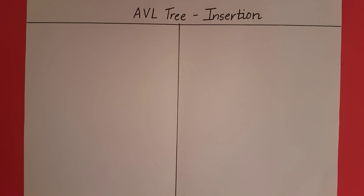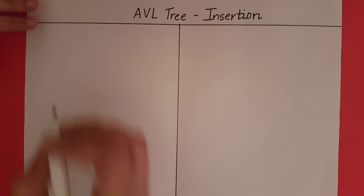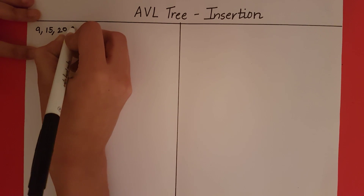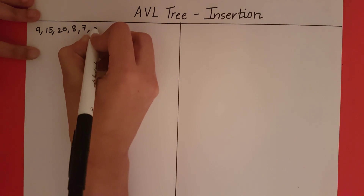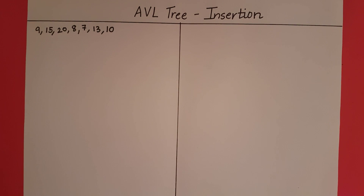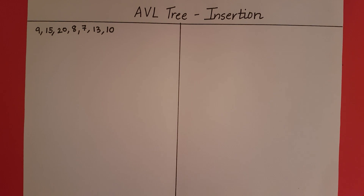In this video, we will take a look at inserting elements into an AVL tree. So let us take an example. We need to insert the elements 9, 15, 20, 8, 7, 13 and 10 into an AVL tree in that order. We are going to insert these elements one by one starting from 9. With every element we insert, we must remember to follow two steps.